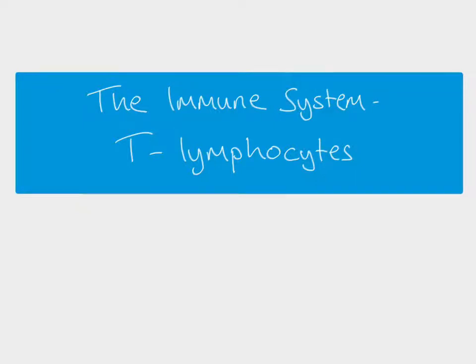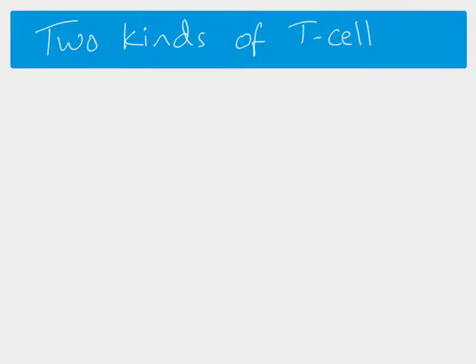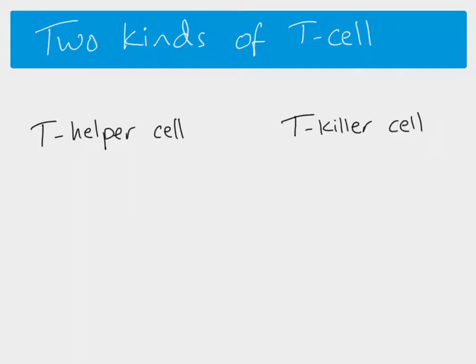This video looks at the immune system, specifically T lymphocytes or T cells. There are two kinds of T cells - both are produced in the bone marrow, the same as B cells, but T cells move to the thymus gland where they mature. That's why they're called T cells - T for thymus. The two kinds are T helper cells and T killer cells.